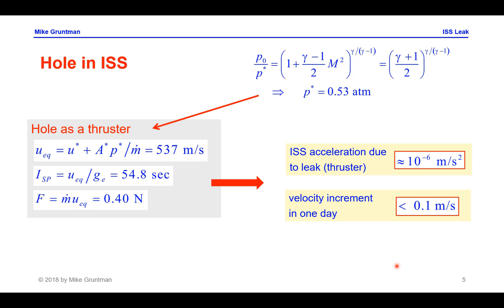The hole in the International Space Station would serve as a little thruster. We can readily calculate its thrust. First, compressible gas dynamics gives us the pressure at the exit of the hole, which would be about 0.5, one half of one atmosphere. So we can calculate the equivalent exhaust velocity, which would be about 540 meters per second. And specific impulse of our small thruster would be close to 55 seconds.